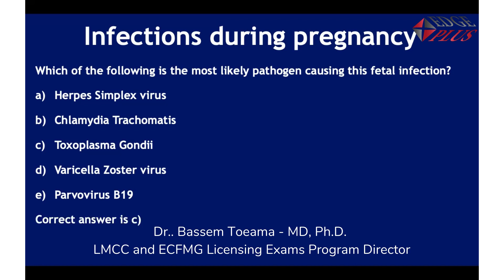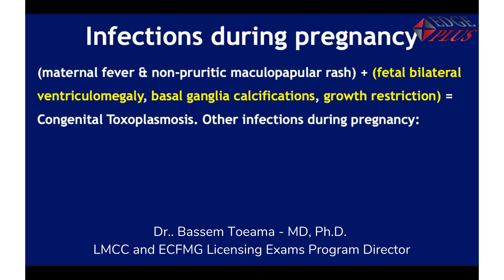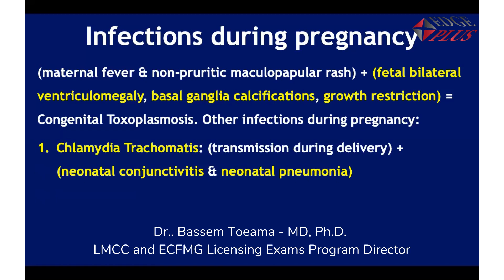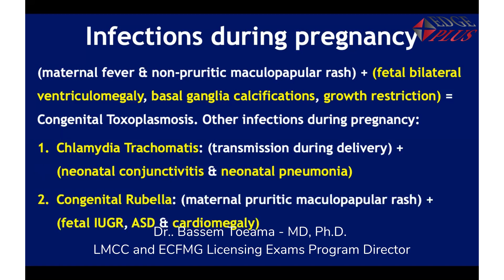The correct answer is Toxoplasma gondii. This is toxoplasmosis because: fetal infection during pregnancy, maternal fever, non-pruritic maculopapular rash, plus ultrasound features of bilateral ventriculomegaly, basal ganglia calcifications, growth restriction, and discrepancy between fundal height and gestational age. For the other infections: chlamydia transmission usually occurs during delivery, with features of neonatal conjunctivitis and neonatal pneumonia. Congenital rubella presents with a pruritic (periodic) maculopapular rash, fetal intrauterine growth retardation, atrial septal defect, and cardiomegaly.